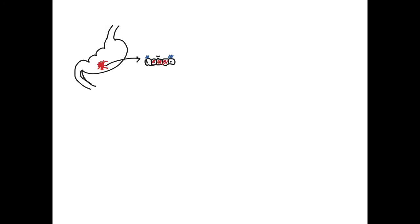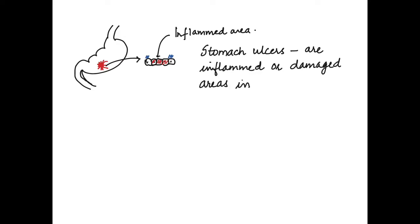So let us see what a stomach ulcer is. In the lining of the stomach, that is the stomach wall, when cells are damaged or inflamed, that particular part is what we call an ulcer. So this is a stomach ulcer or a gastric ulcer.